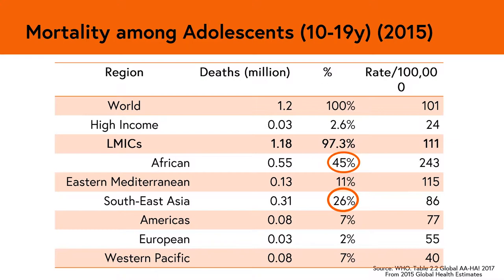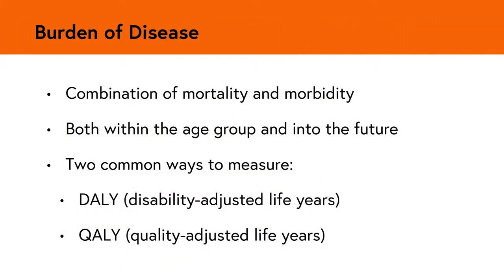We can see here that there are regional variations, with most deaths in low and middle income countries, and highest mortality in Africa, which accounts for 45% of adolescent deaths in low and middle income countries, followed by Southeast Asia, which accounts for 26%. Mortality is relatively low in the adolescent age group compared with other age groups, but the burden of disease is high, due to lifelong morbidity resulting from conditions with onset in adolescence.